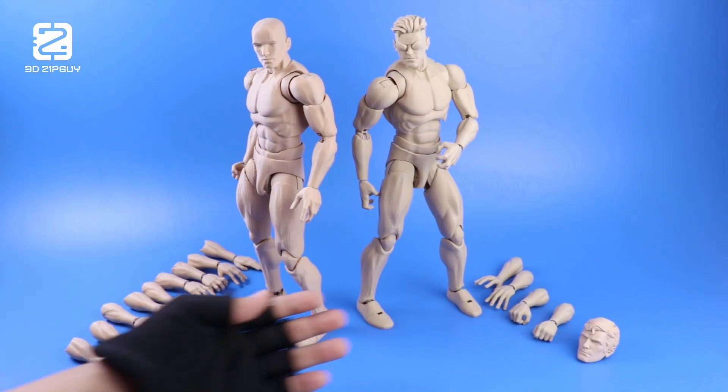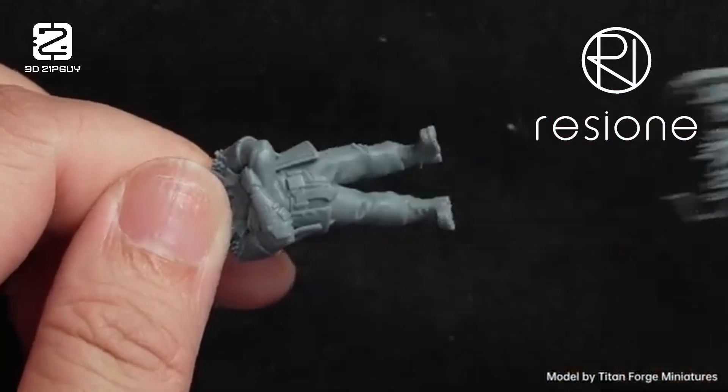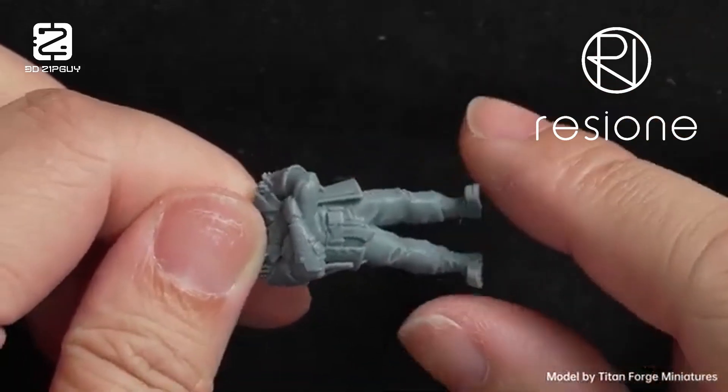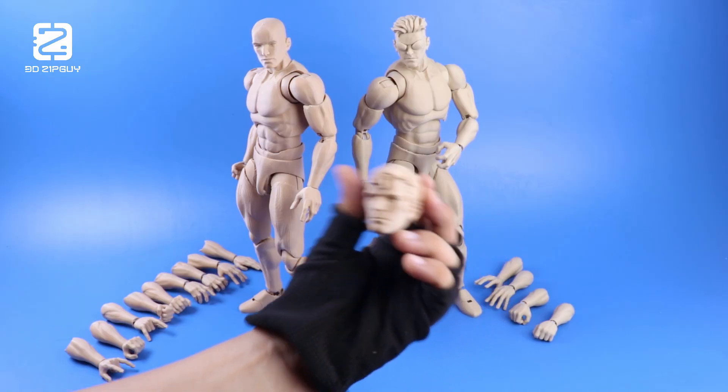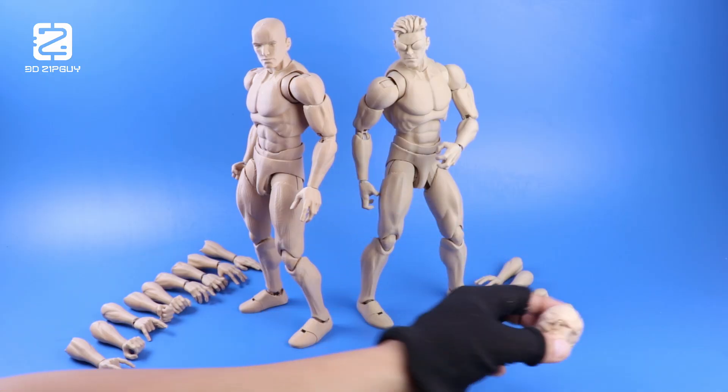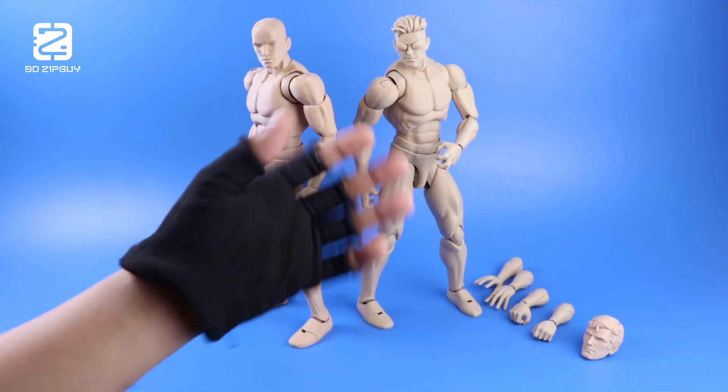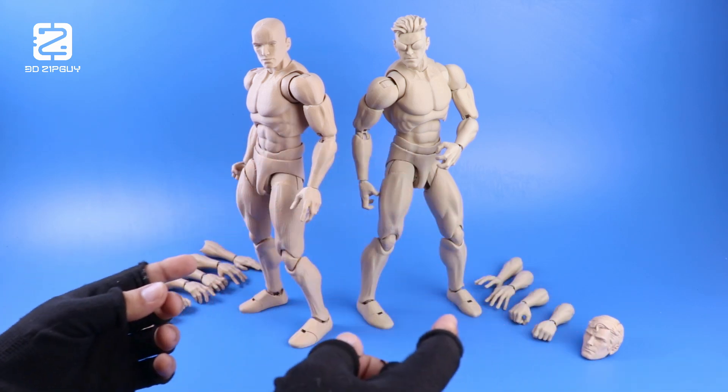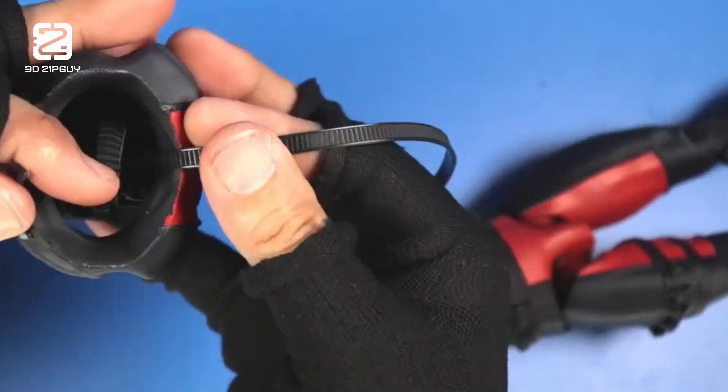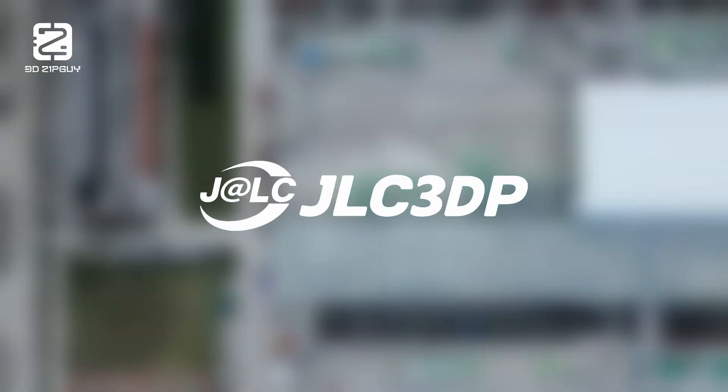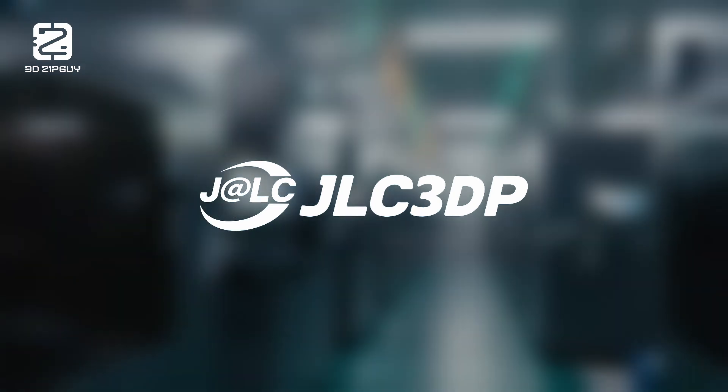But as nice looking and functional as this filament is, resin just takes the cake when it comes to surface quality. That said, picking the right resin for action figures isn't as straightforward as buying a spool of PLA. You have to consider whether it can handle the stress from tightened zip ties and how much it shrinks when curing. Thankfully, our sponsor JLC3DP has taken the guesswork out of the equation.